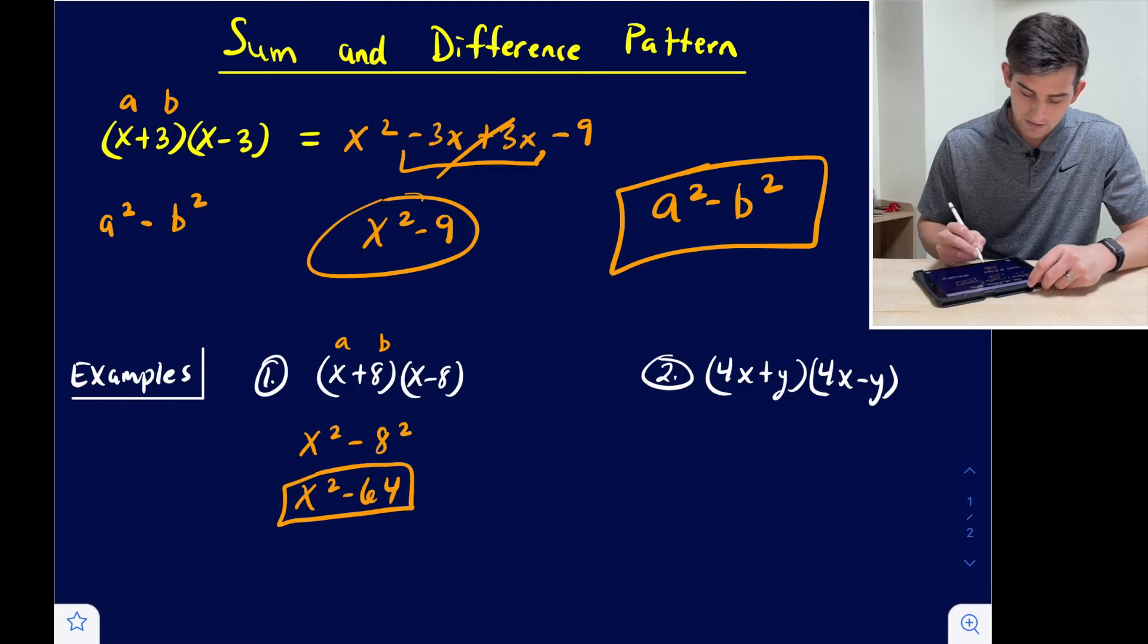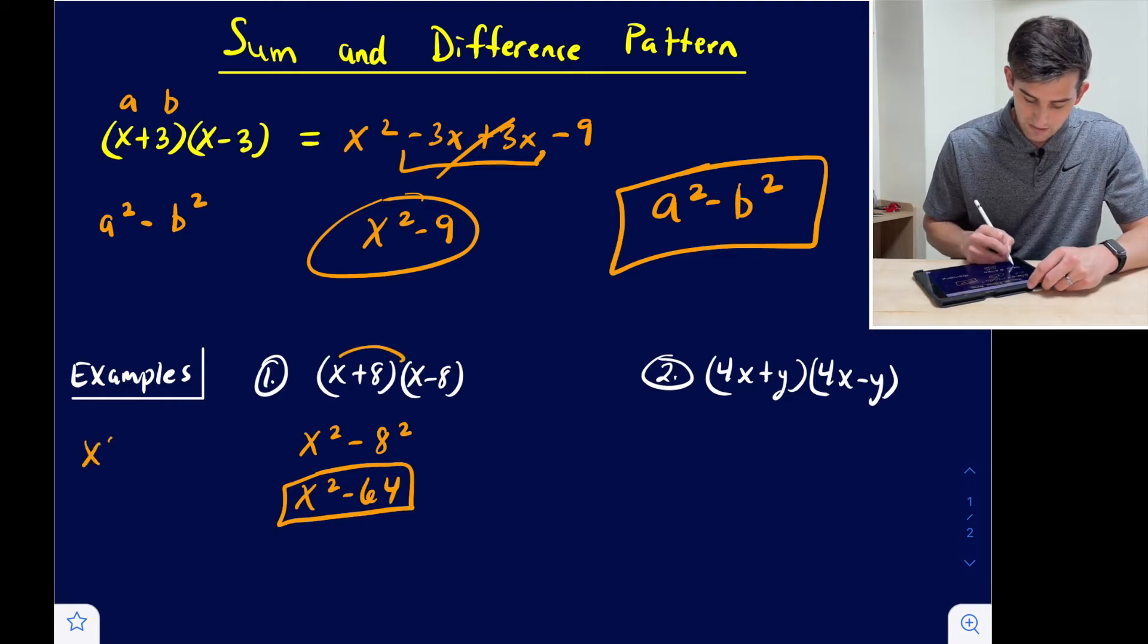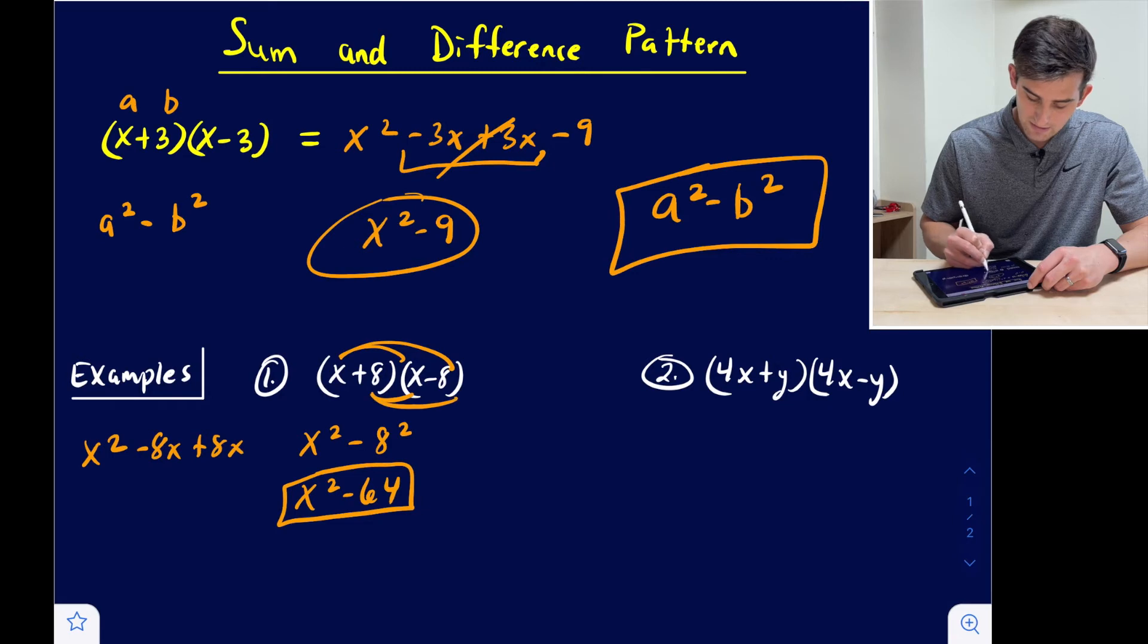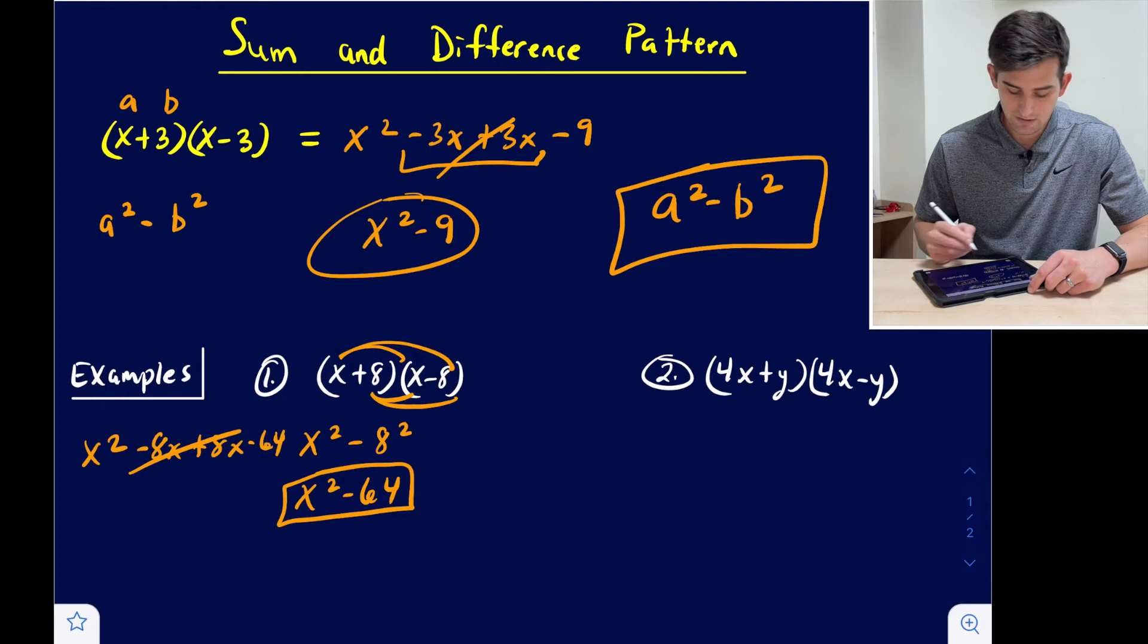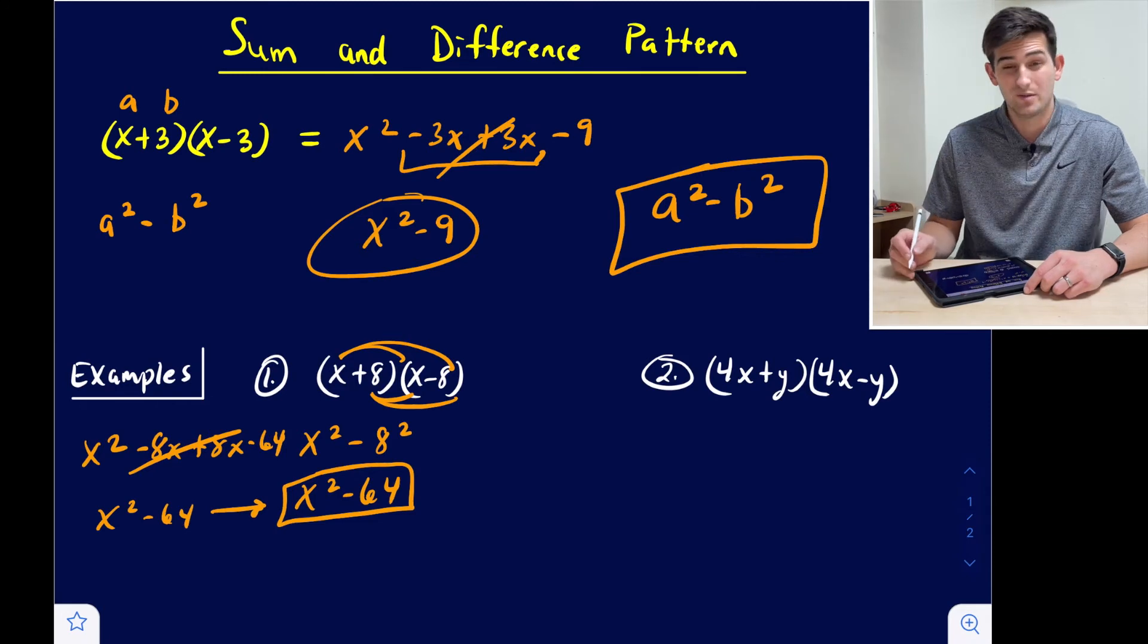Let's check that by foiling. If we foil here at the top, x times x would be x squared, x times negative 8 would be negative 8x, 8 times x would be plus 8x, and 8 times negative 8 would be negative 64. Notice there in the middle, our like terms cancel out. So we're left with x squared minus 64, which is what we got from our sum and difference pattern.